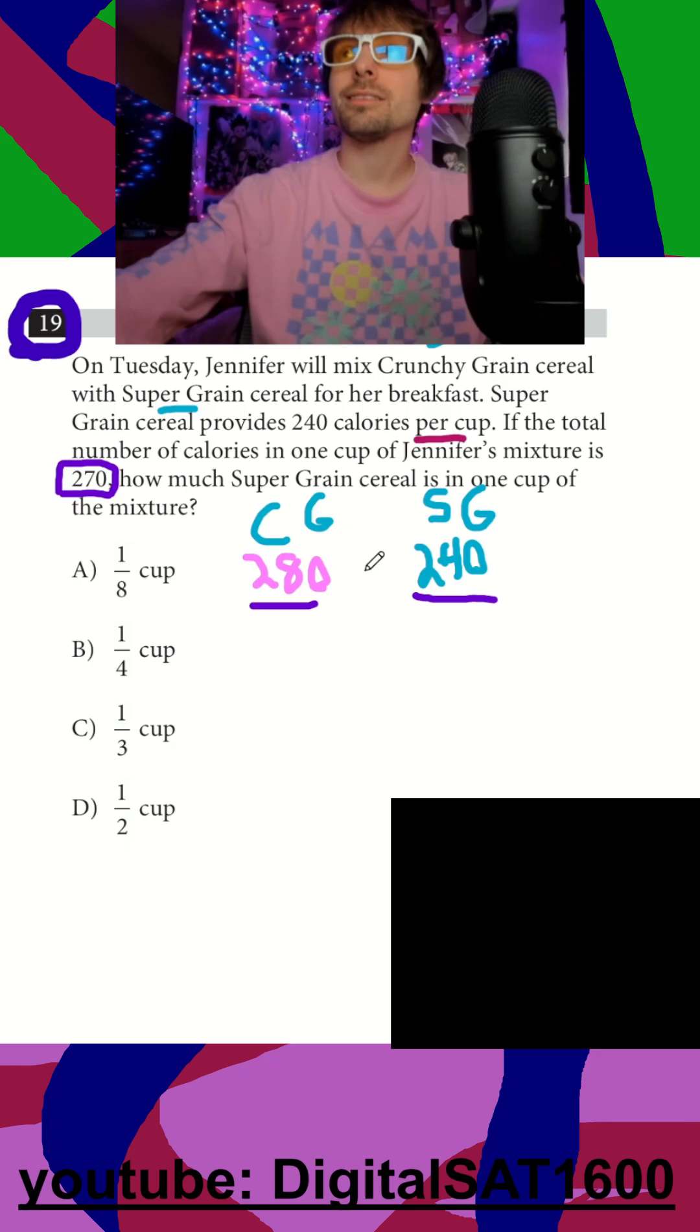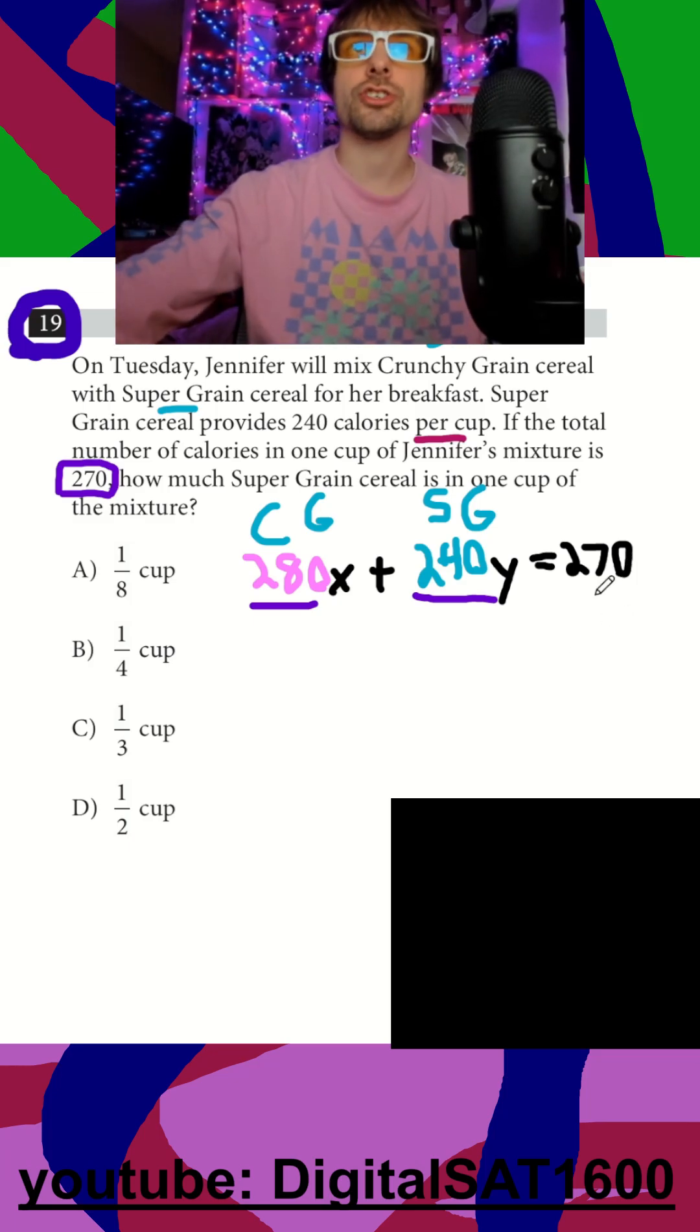This is going to be derive your two equations, right? This is going to be our weighted equation. So I can just say, all right, we have X Crunchy Grain, Y Super Grain, and it's going to combine to give us some total of 270 calories. This is my calorie equation.